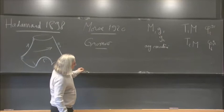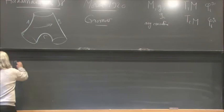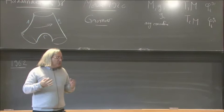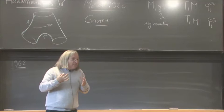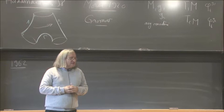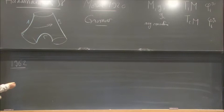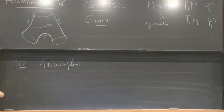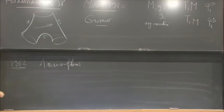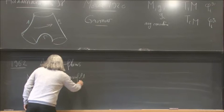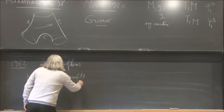In 1962, Anosov wanted to understand this picture better. He wanted to understand how the negativity of curvature implies this rigidity — this structural stability, to use modern terminology — the structural stability of geodesic flow in negative curvature. He introduced a concept we now call Anosov flows, which I will only describe in dimension 3. You have a compact 3-manifold and a smooth flow on it.